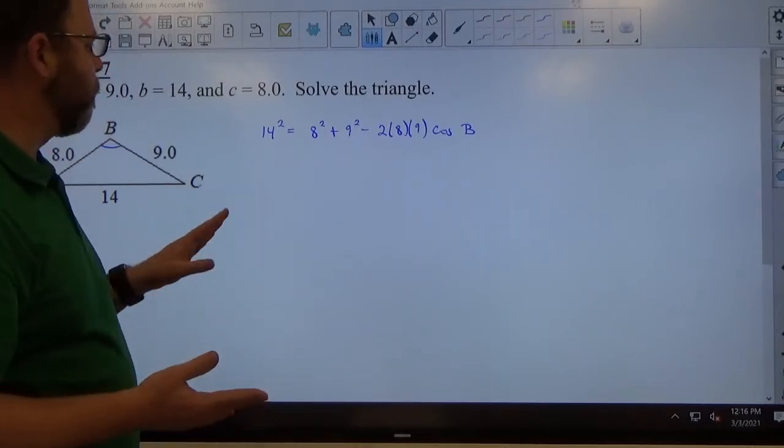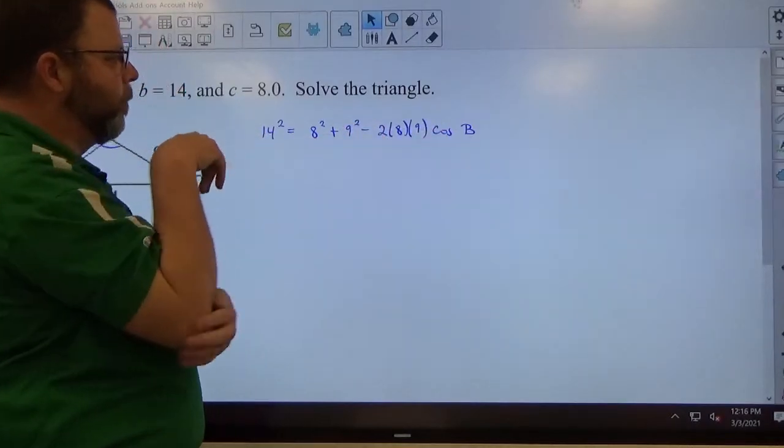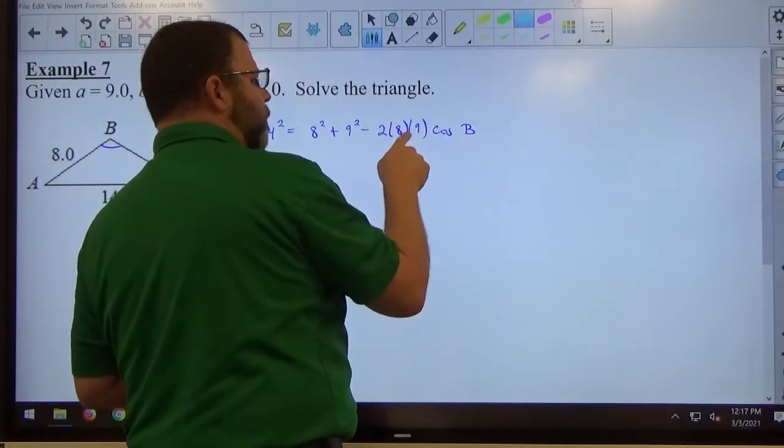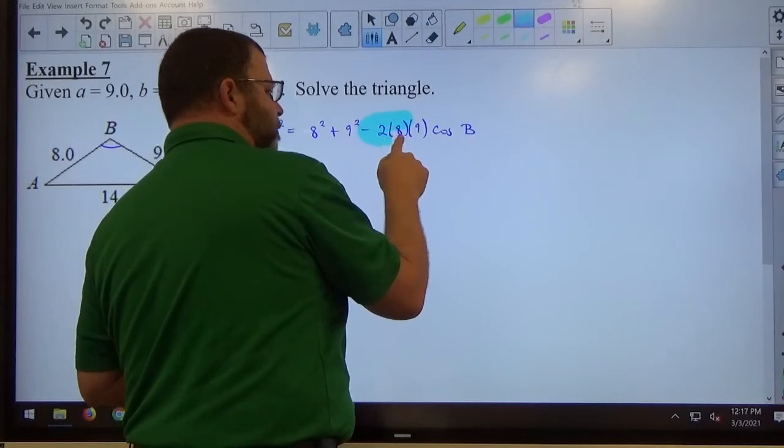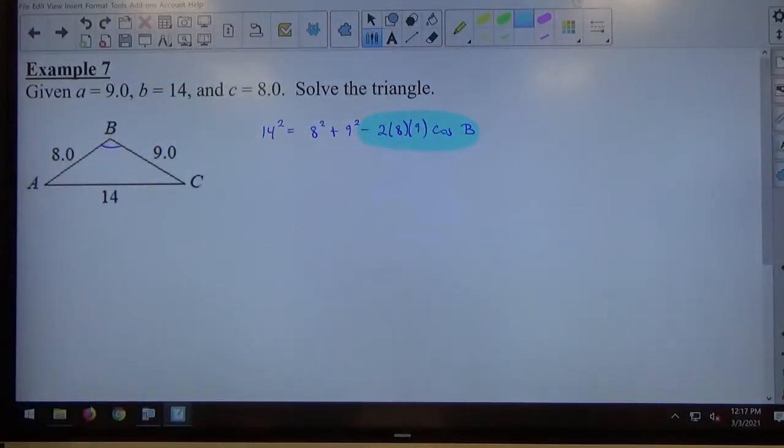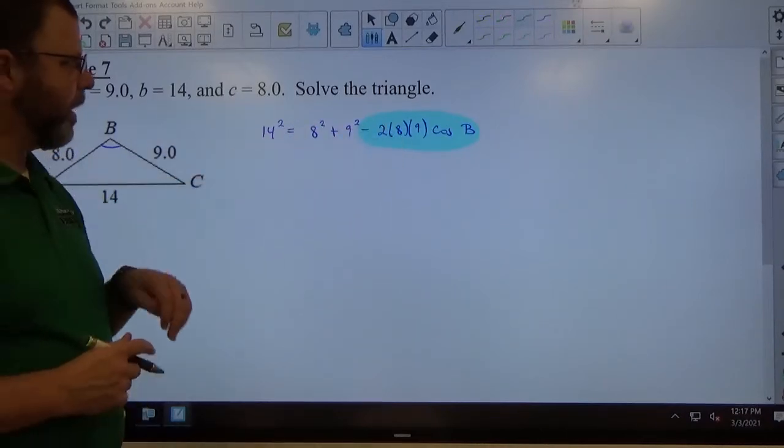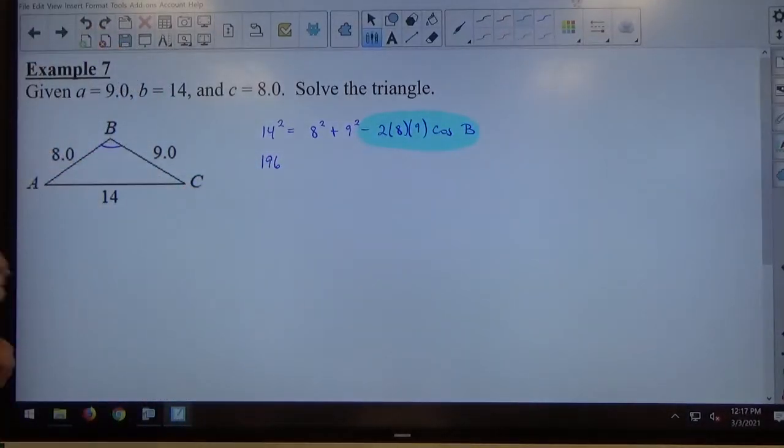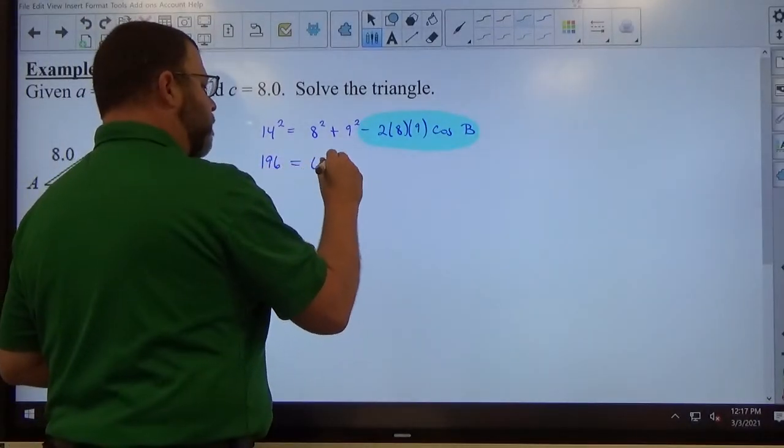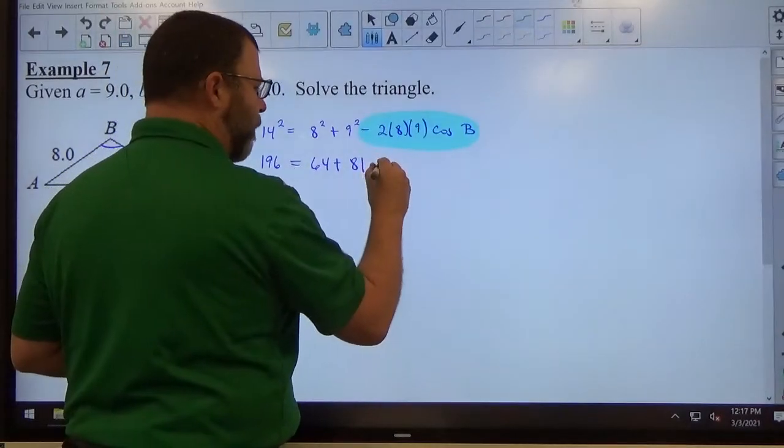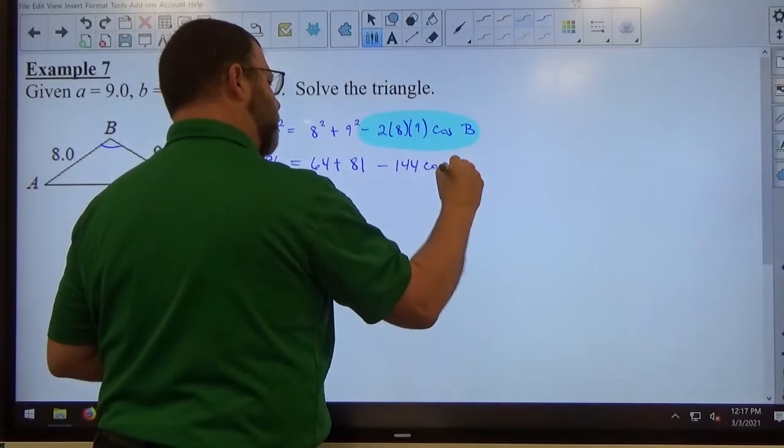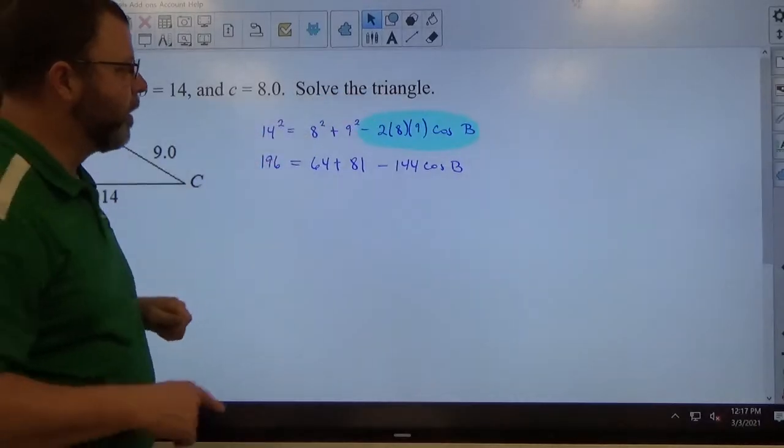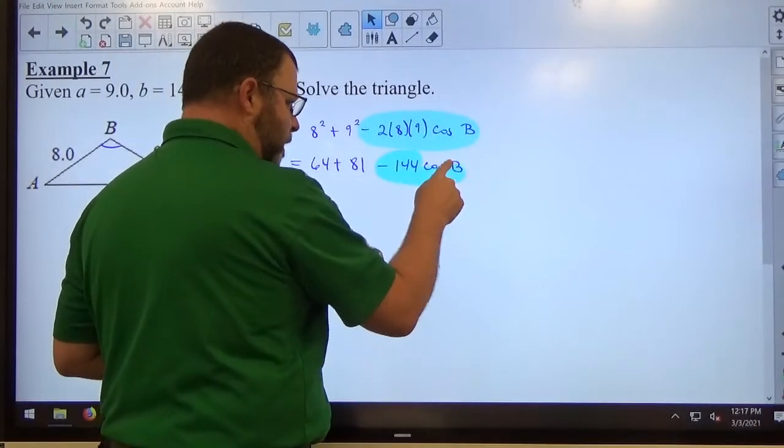Now the difference between this one and the previous one is now this side over here isn't all numerical. We have this term over here, 2(8)(9)cos B. It has this cosine of B, and the B is involved inside the cosine function. So what I need you guys to train yourself to do here is be patient with this. This has to be dealt with separately from everything else. So I'm going to square all the pieces and multiply these things together. So 14² is 196. 8² is 64. 9² is 81. 2(8)(9) is 144. The cosine of B is still attached to this product, but this is the end result of that product, negative 144.